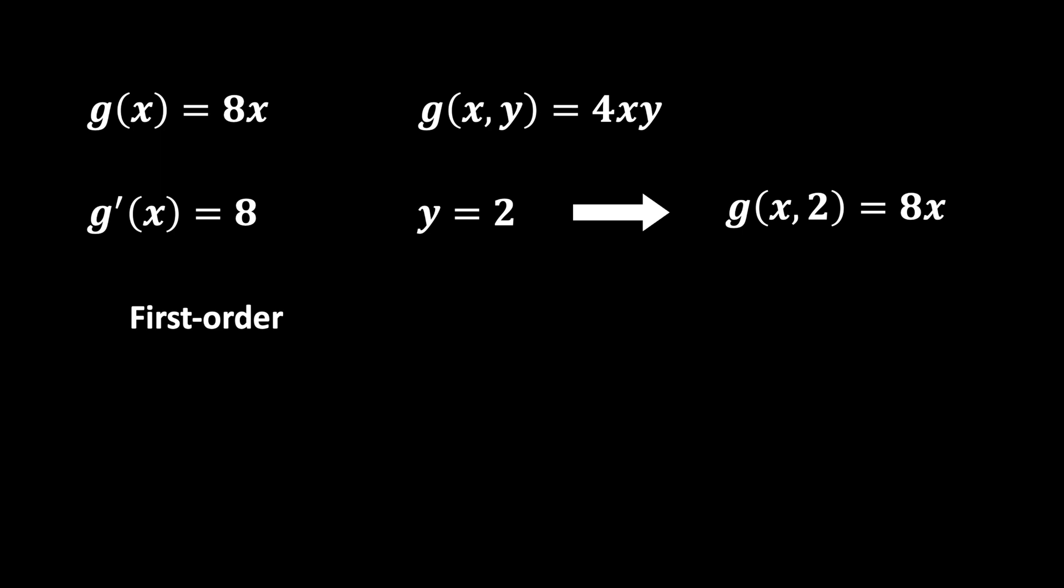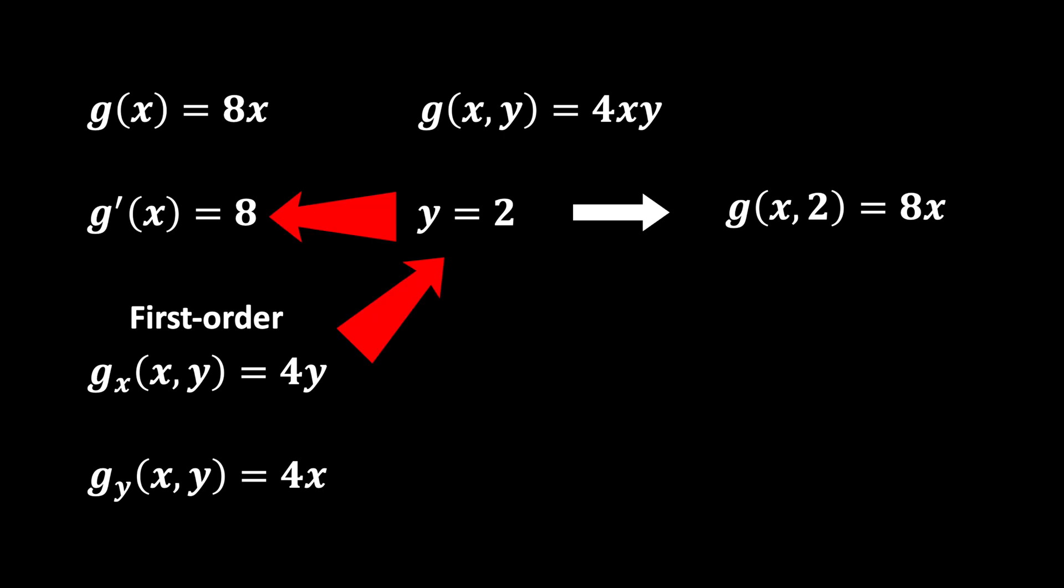Therefore, with our new g(x,y), we can take partial derivatives in terms of either x or y and denote them in this way respectively. If we were to take the partial derivative of g(x,y) with respect to x, we would get 4y, which is the same result for the original g'(x) we found when y = 2, since we would get 4 times 2 equal to 8. It's just that, in the case of this new partial derivative, that value of y can take any value and is not restricted to the value of 2.